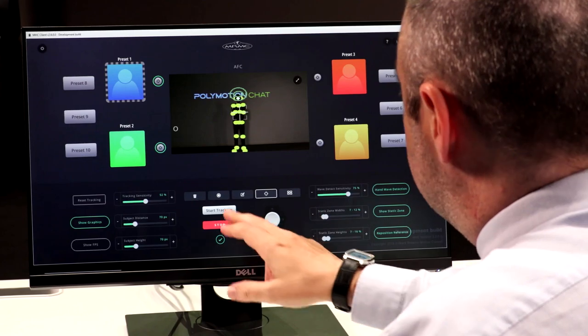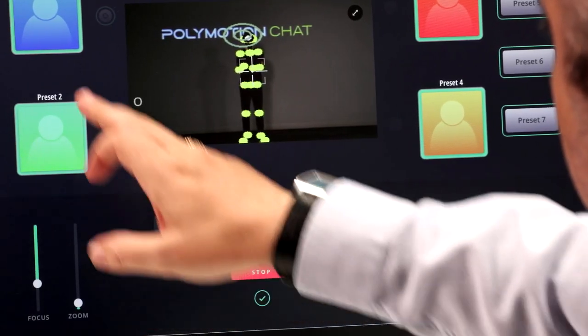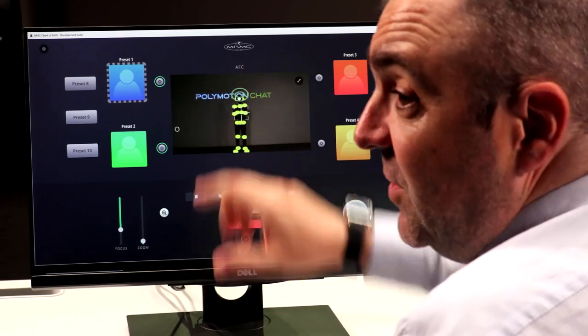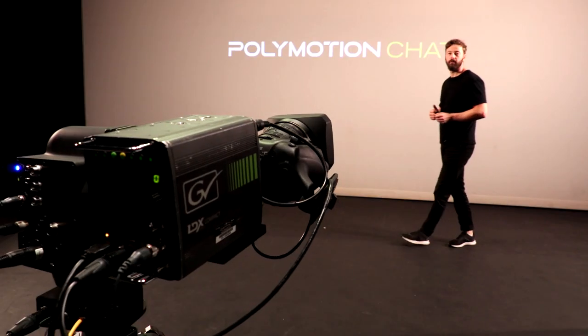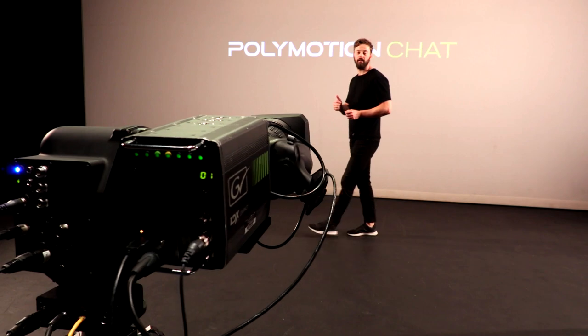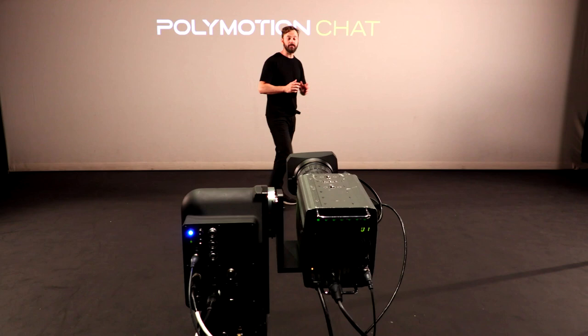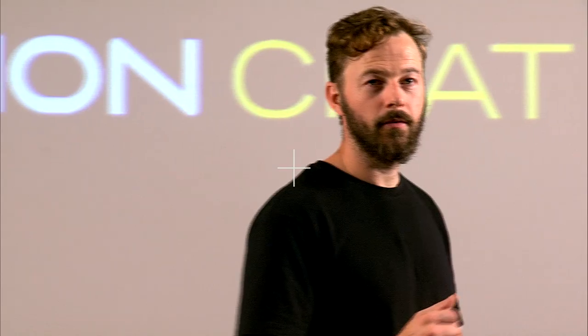Once that's all been designed, you'd simply save the preset, save it as preset one, and that's it. That is now locked in as a preset. With presets, you can set up any framing you want, whether it's a wide shot, a medium shot, a close-up. If you're doing news, you might want a close-up shot to one side.